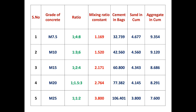For M7.5 grade of concrete, the ratio is 1:4:8. The ratio constant = 15.2 ÷ (1 + 4 + 8) = 15.2 ÷ 13 = 1.169. Then required cement = 1.169 × 1 = 1.169 cubic meters, which equals 32.73 bags of cement.